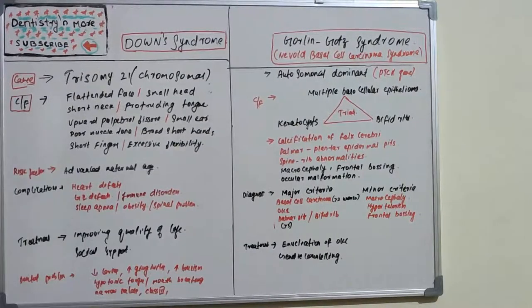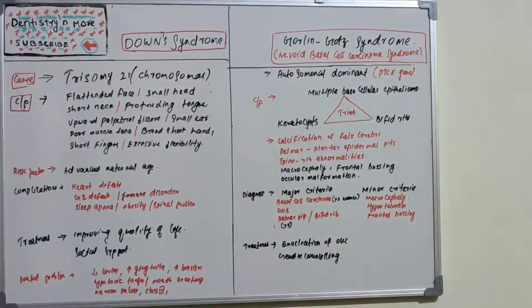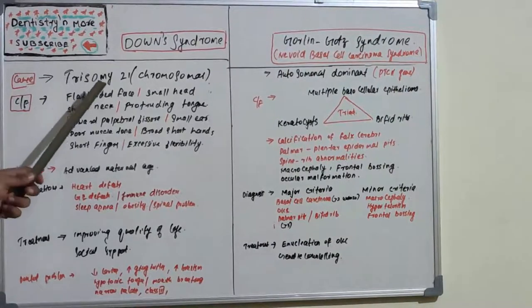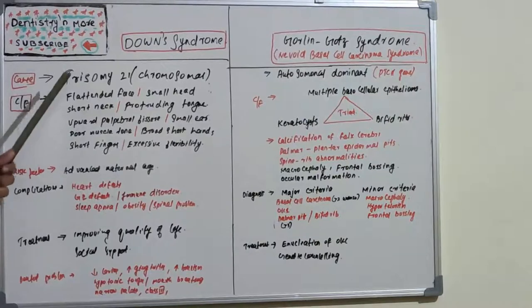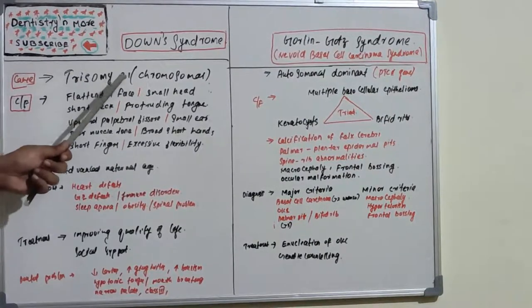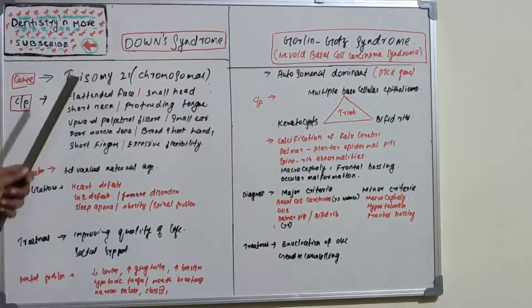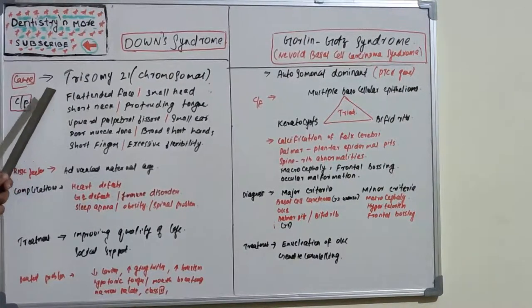Down syndrome is a chromosomal abnormality where the problem lies with chromosome number 21, so it's known as trisomy 21. An extra chromosome is present on 21, and it's clinically presented with various features.